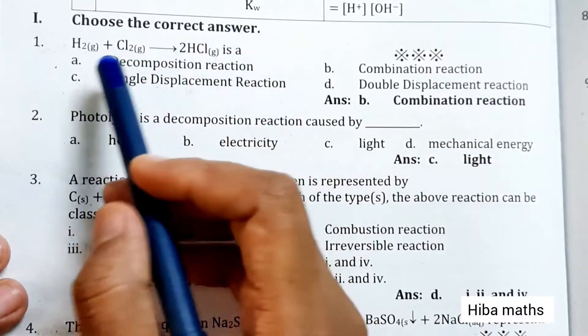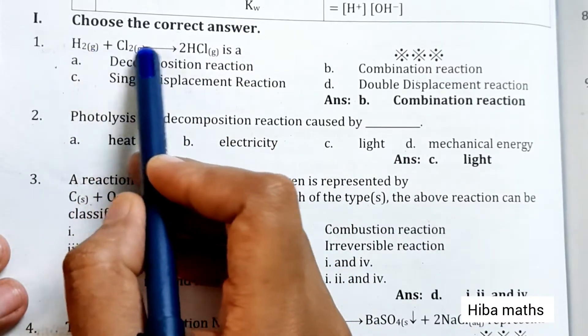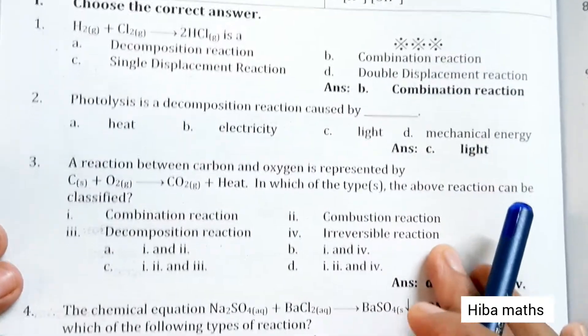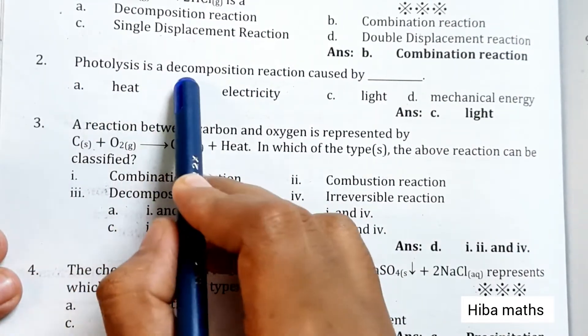Choose the correct answer. H2 plus Cl2 gives us 2HCl - is this a combination reaction or photolysis decomposition reaction caused by light?